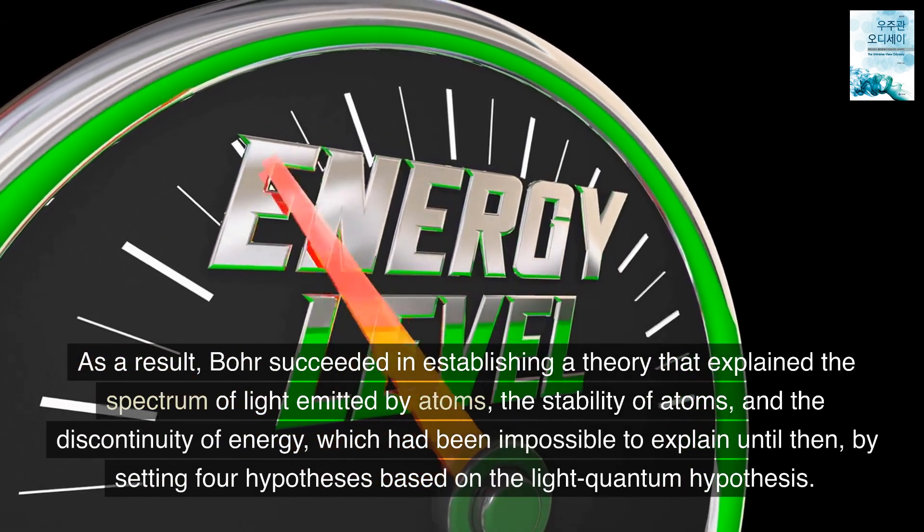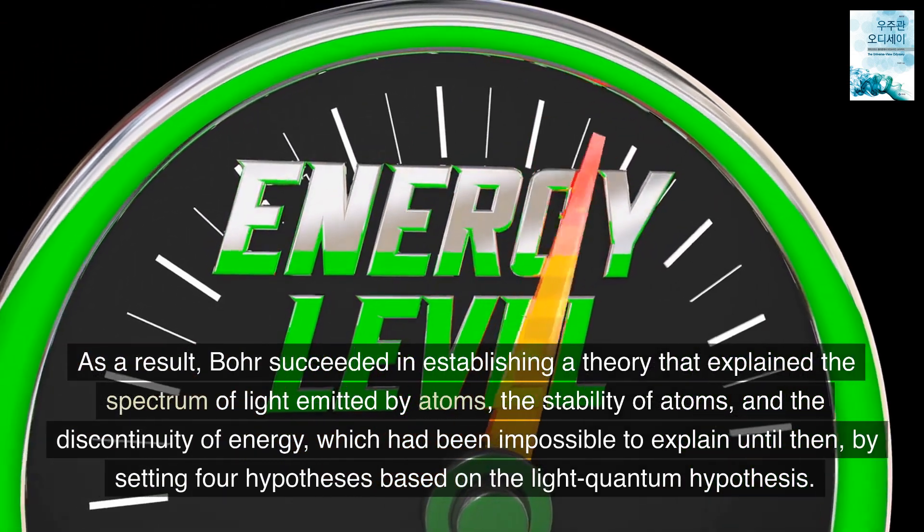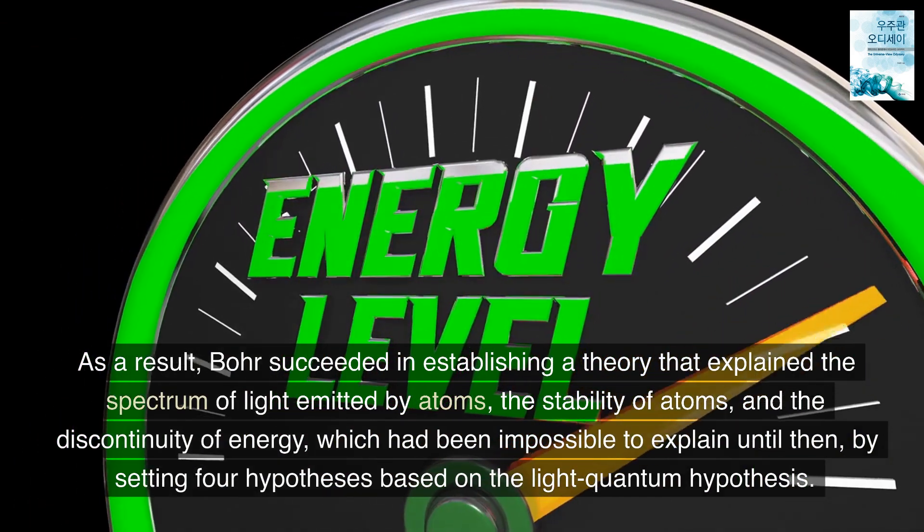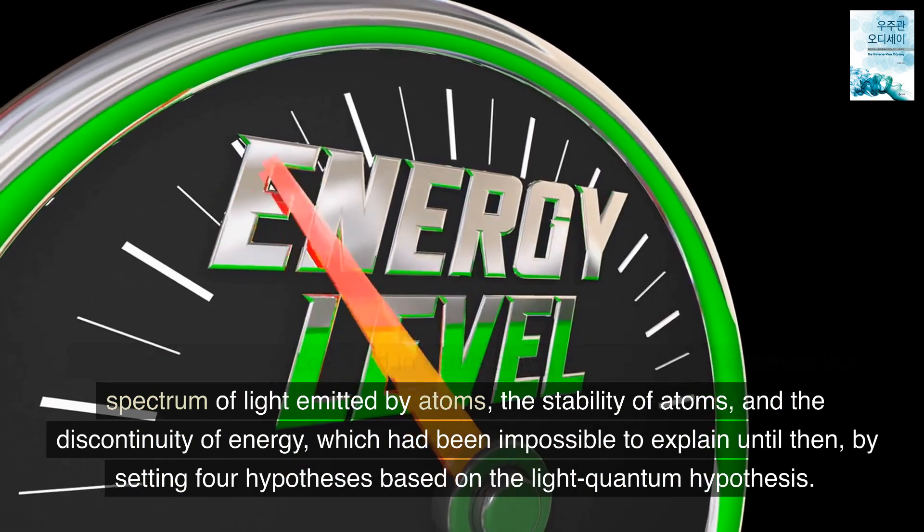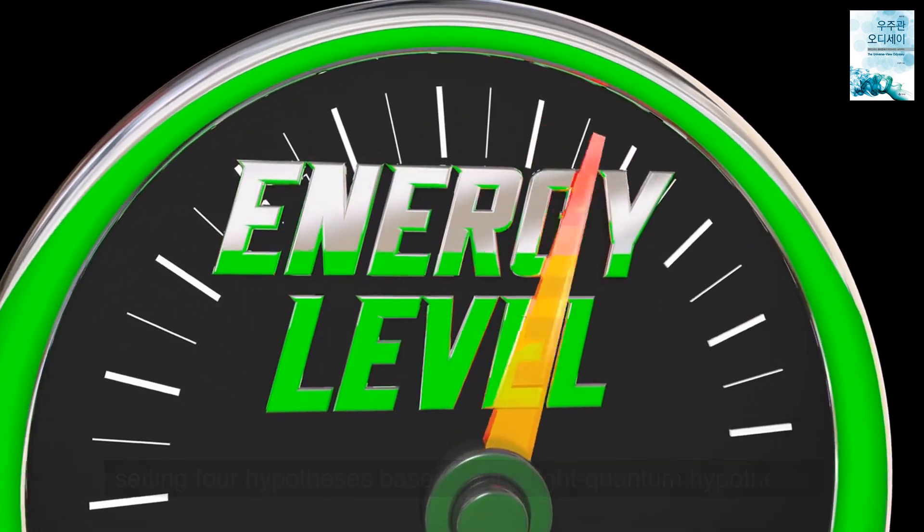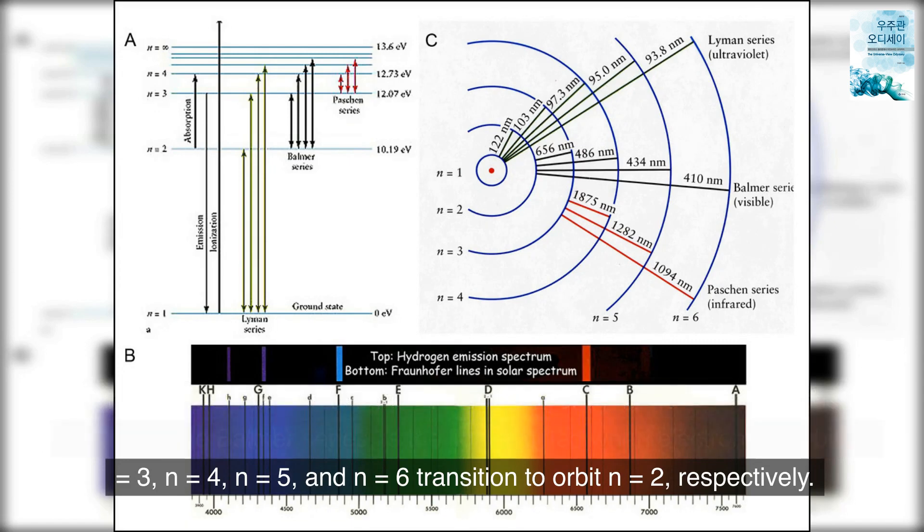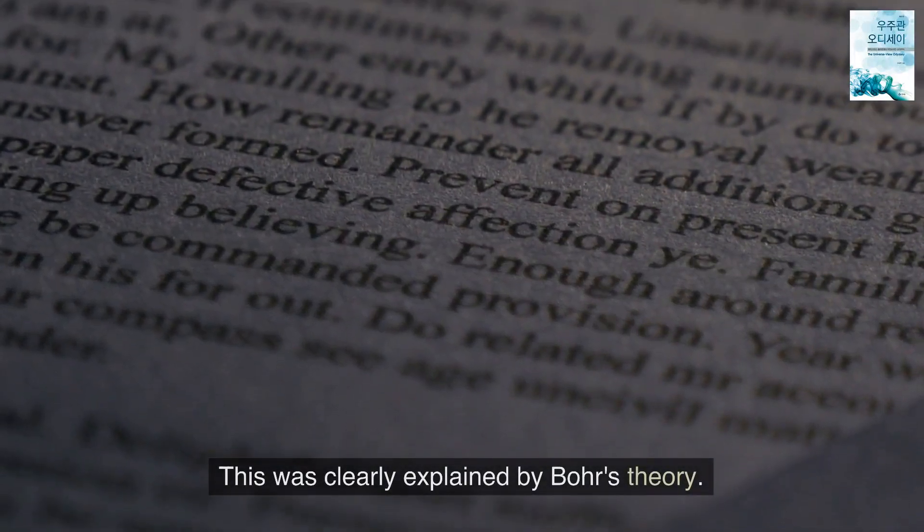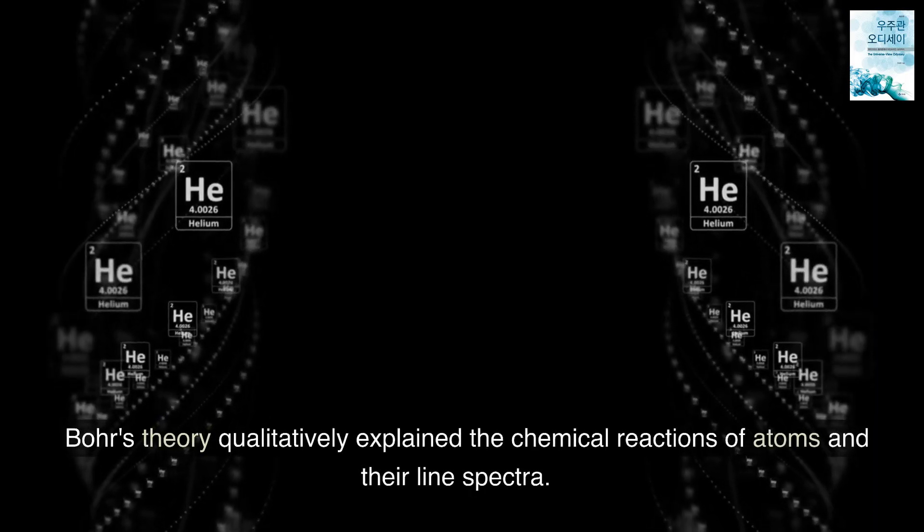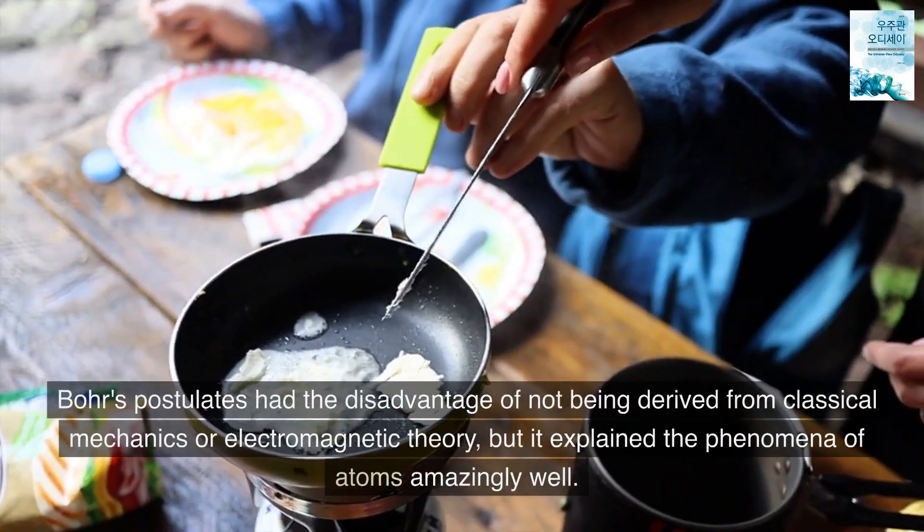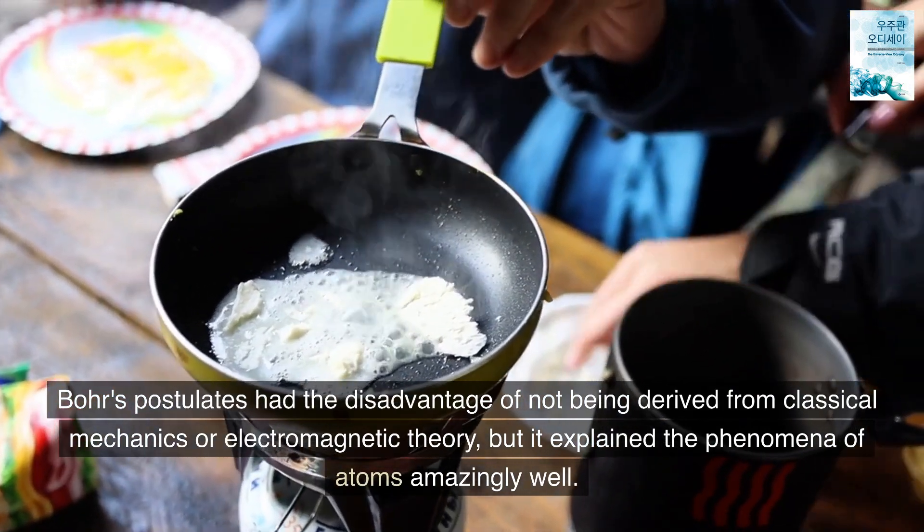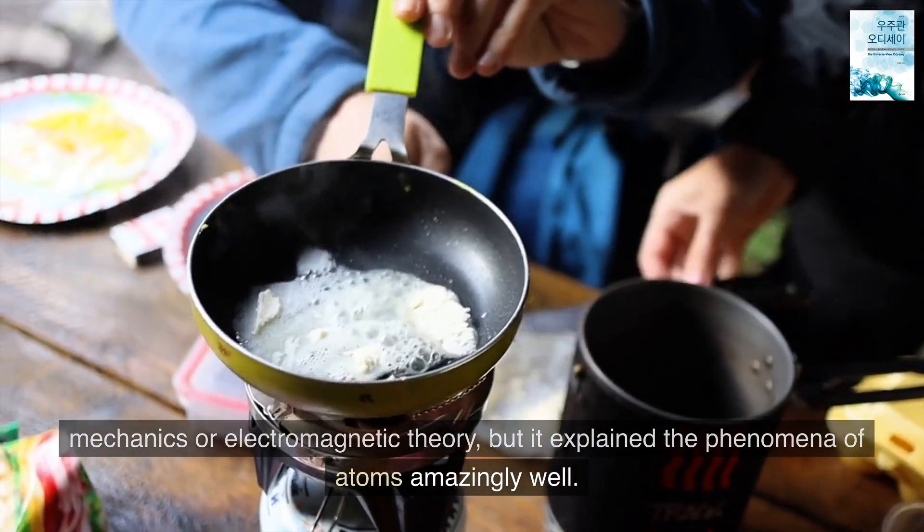As a result, Bohr succeeded in establishing a theory that explained the spectrum of light emitted by atoms, the stability of atoms, and the discontinuity of energy, which had been impossible to explain until then, by setting four hypotheses based on the light quantum hypothesis. The spectrum of visible light emitted by hydrogen atoms, that is, the identity of the Balmer series, is the light emitted when electrons in orbits n equals 3, n equals 4, n equals 5, and n equals 6 transition to orbit n equals 2, respectively. This was clearly explained by Bohr's theory. Bohr's theory qualitatively explained the chemical reactions of atoms and their line spectra. Bohr's postulates had the disadvantage of not being derived from classical mechanics or electromagnetic theory, but it explained the phenomena of atoms amazingly well.